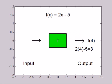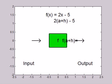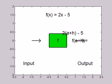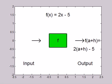This next example seems rather peculiar, but it shows us that algebraic variables that represent numbers can also be input values. So double the input value, a plus h, and subtract 5. Parentheses are important here so you remember to distribute the 2. So f of a plus h is 2a plus 2h minus 5.